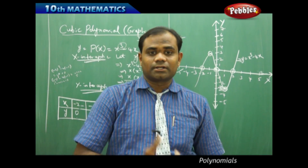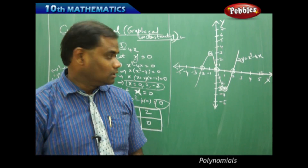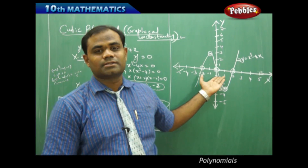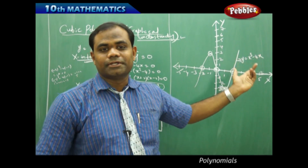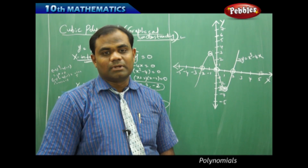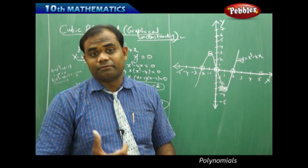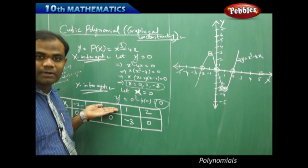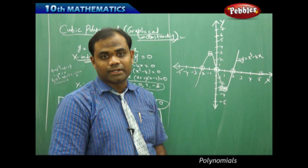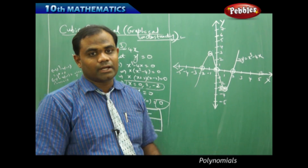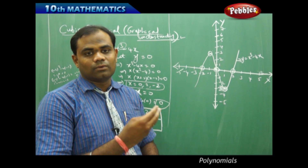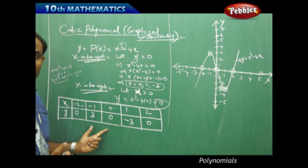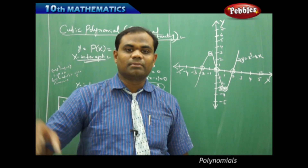We can construct shapes for many different types of polynomials using this same process. For a quartic polynomial, I would use a table of values, plot the points, and join them to get the shape. Similarly for a quintic polynomial — a polynomial with degree 5 — I take values in the table, find corresponding y values, plot on the x-y coordinate system, and join the points with a smooth freehand curve to get a quintic curve.